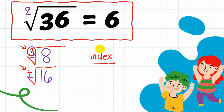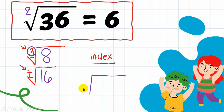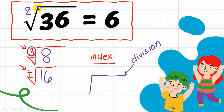Another important thing: do not be confused by these two symbols. The radical sign has a small extra line attached to it, while the division symbol does not. This symbol is our radical sign, and this other symbol is our division symbol. Keep them distinct as we go on with our lesson.